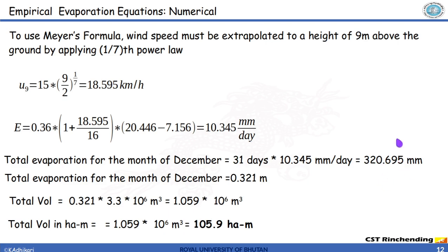If you multiply this with the area we are going to get volume in meter cube. Total volume would be the total area multiplied by this depth. So we get the total volume of water that has evaporated. Now, the question also asks us to find it in hectometer. In hectometer you simply divide this whole value by 10 to the power 4 and we get 105.9 hectometer. That is our answer.